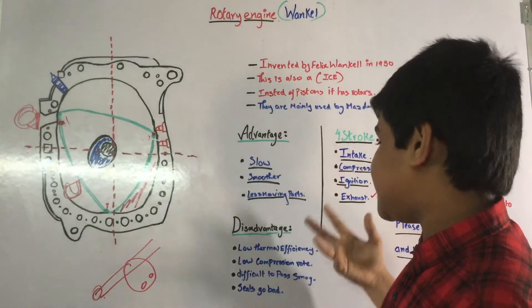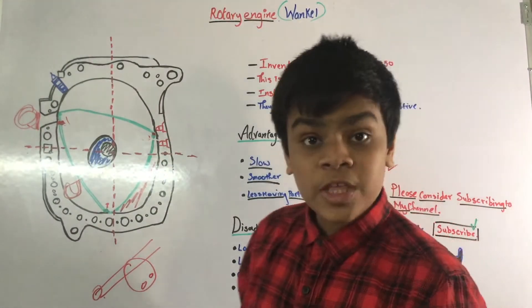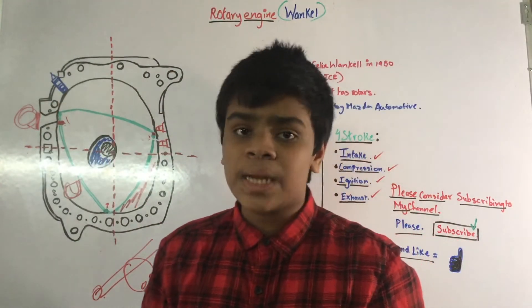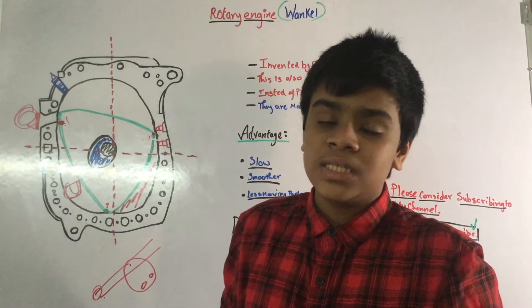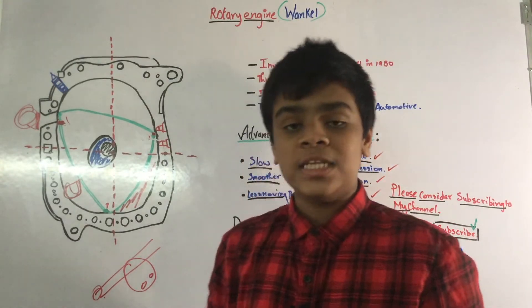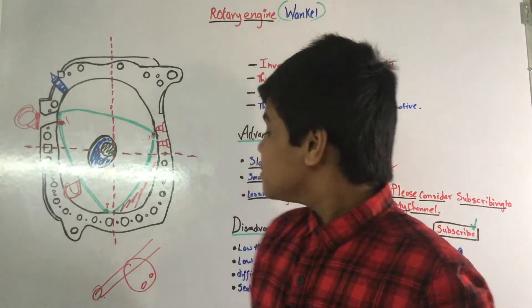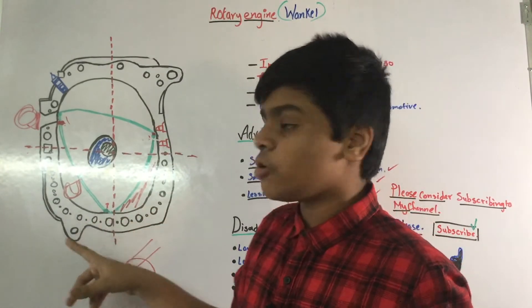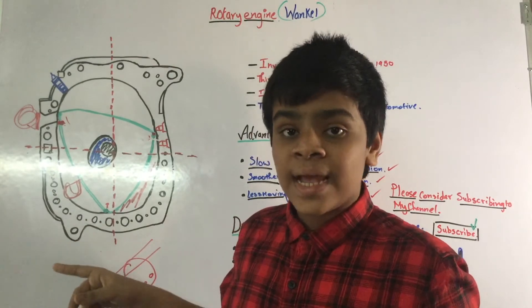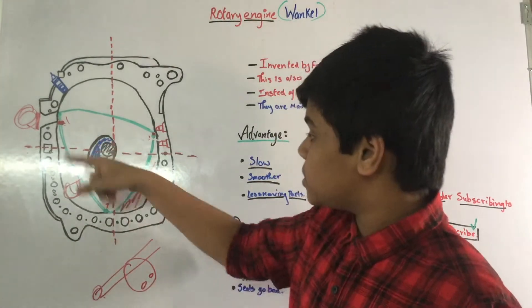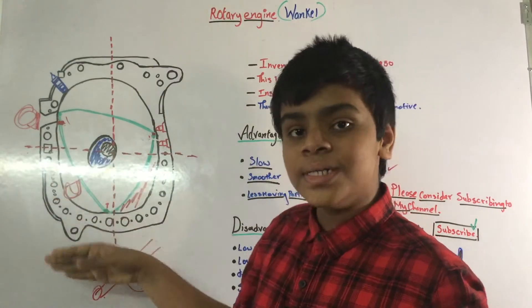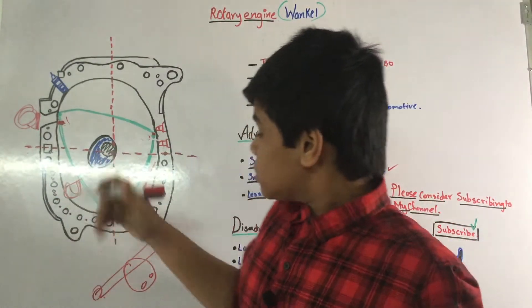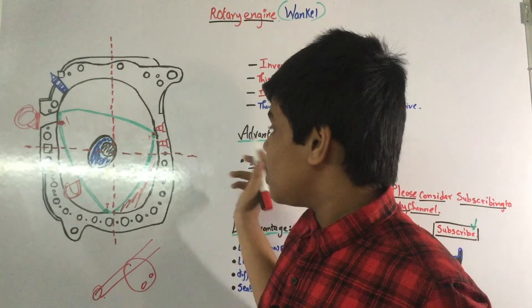One more detail: there are many holes in the engine housing. These are how coolant enters the rotary engine. They are known as coolant jackets — the coolant flows through these passages to cool the engine, just as it would in a regular piston engine.